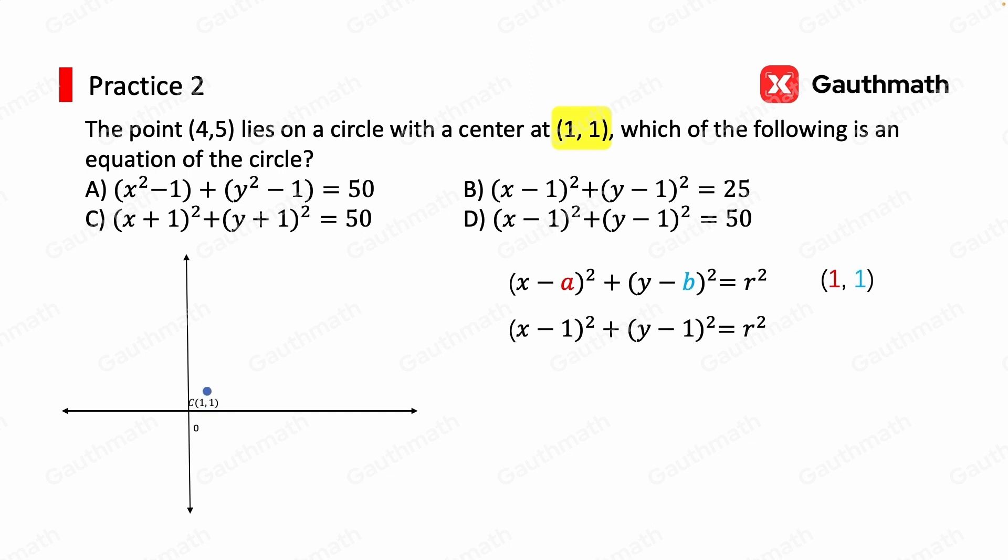Centered around 1, 1 with the unknown radius. And we have a point 4, 5 on the circle. After sketching this graph, we can see that if we connect the center to the given point, we will be able to find the radius using the Pythagorean theorem.